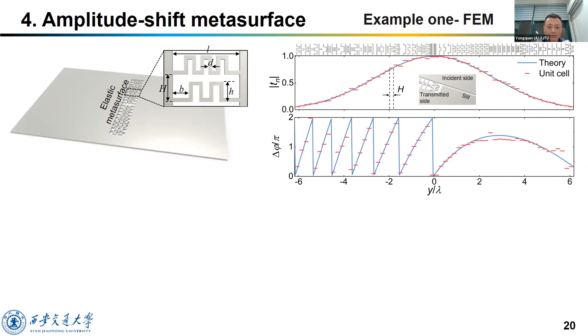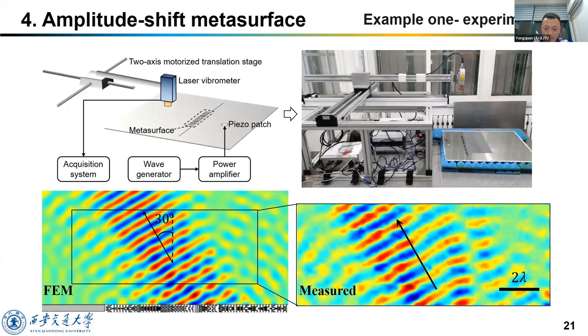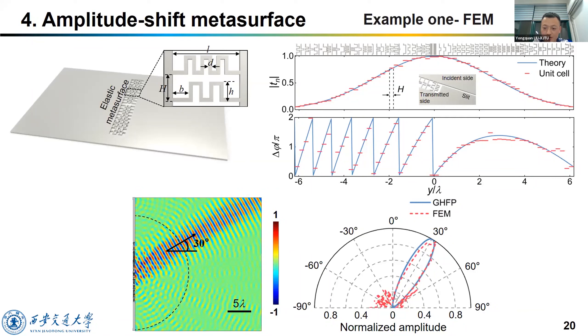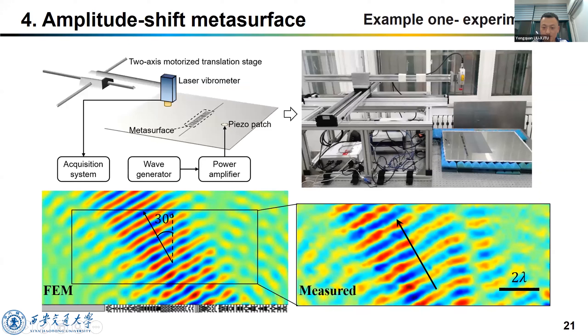In reality, we use zigzag structures to design the real metasurface. Here is our design. We just tune the geometric parameters d, h, and the number of the zigzags to tune the phase and amplitude. Here is the FEM result, which is quite similar to our target pattern. And this metasurface has been experimentally verified.